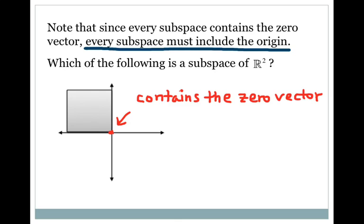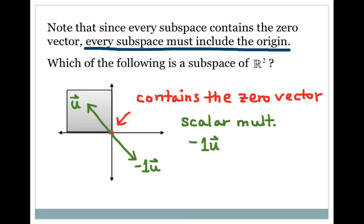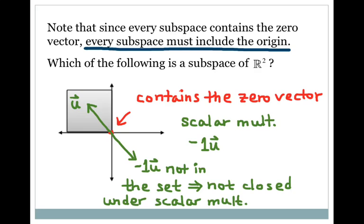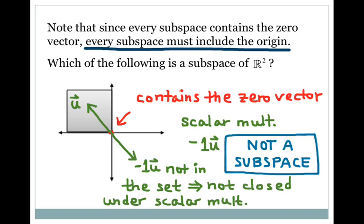Now let's look at an arbitrary vector u in our subset and check scalar multiplication. The easiest thing to consider would be negative 1 times u. If I draw that, I end up outside of my set. So negative 1u is not in the set, and so we say that it's not closed under scalar multiplication. So it's not a subspace because it fails the scalar multiplication criteria.